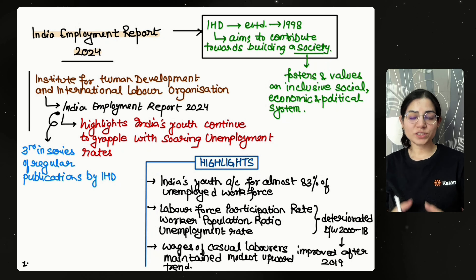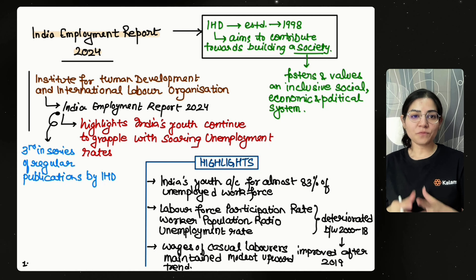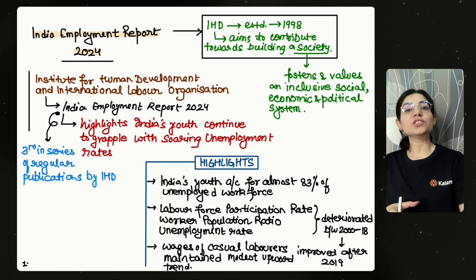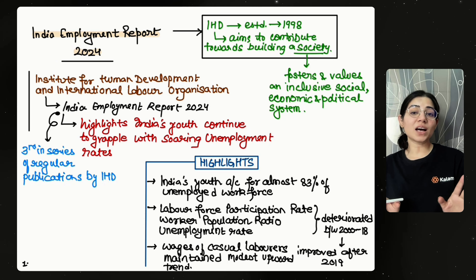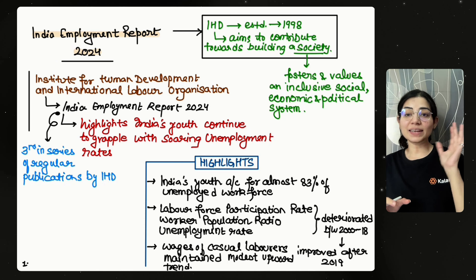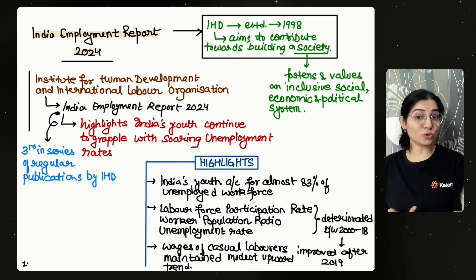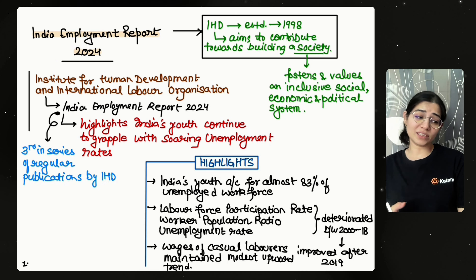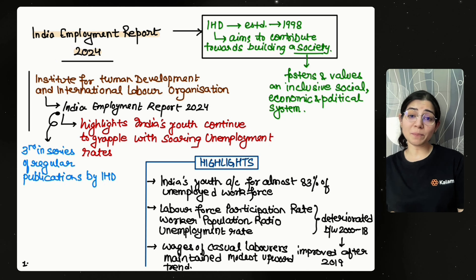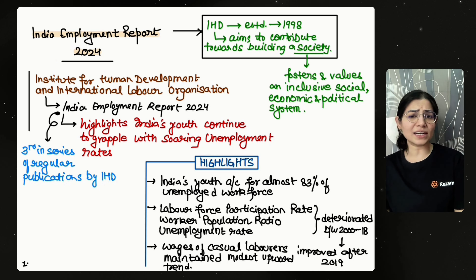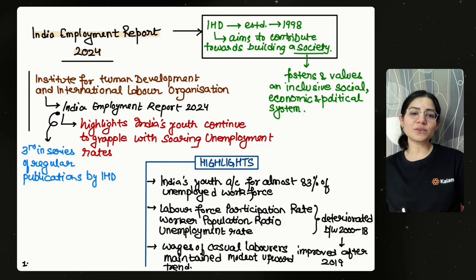The first very important topic we are starting with is the India Employment Report 2024. When we talk about reports and indices, the first question UPSC will ask is who is publishing these reports and indices. Second, what were the highlights — what outputs did these reports reveal? These four important factors you should always remember: what is the purpose, when is it published, and what are the highlights. The India Employment Report 2024 basically talks about the employment condition in India.